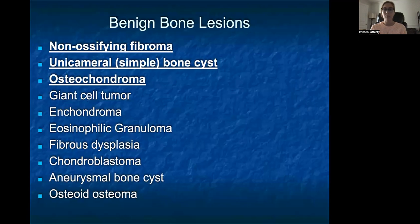There are a whole bunch of different benign bone lesions, but the three we will review today are non-ossifying fibromas, unicameral or simple bone cysts, and osteochondromas.